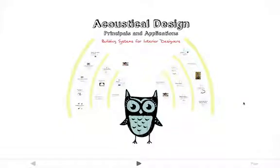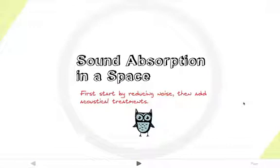For part two we're going to talk about how sound is absorbed and transmitted within a space. The acoustical treatment of a space starts with reducing the noise source as much as possible, followed by a control of unwanted sound reflections. Speech privacy is another major acoustic concern for the interior designer. Sometimes it is also necessary to decrease or increase reverberation time for sound clarity and quality.